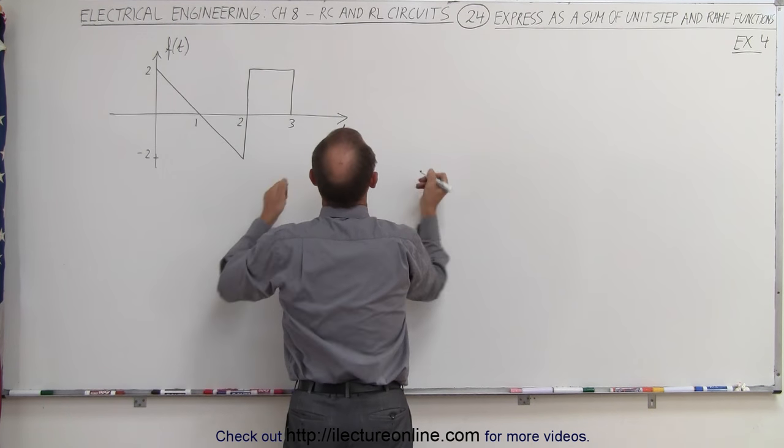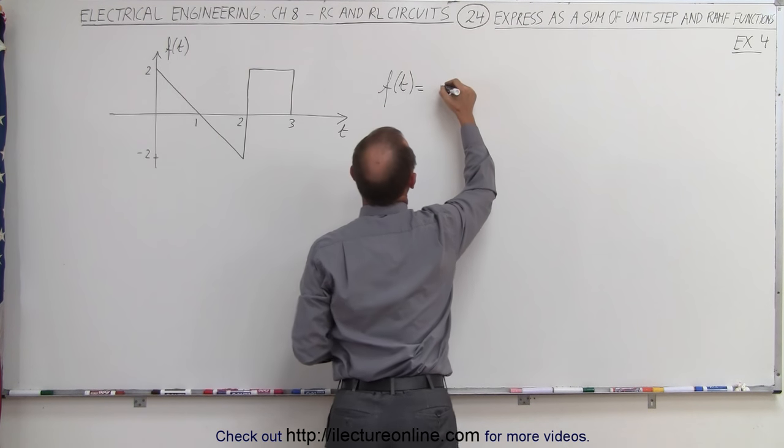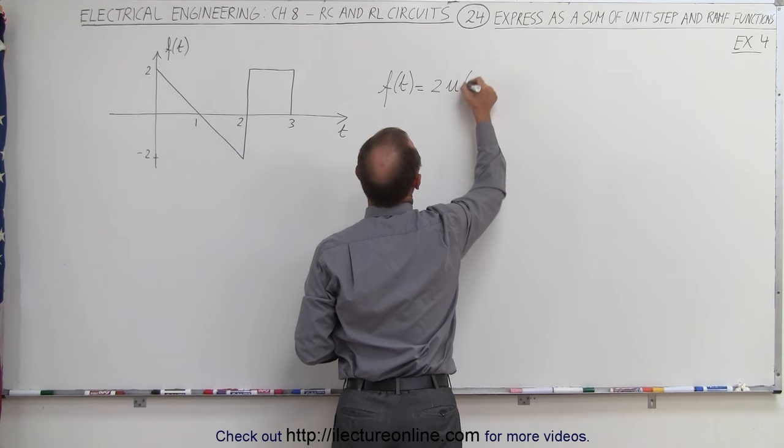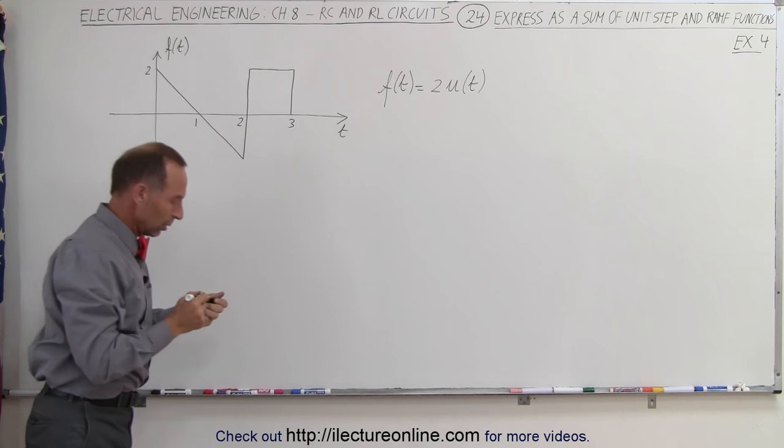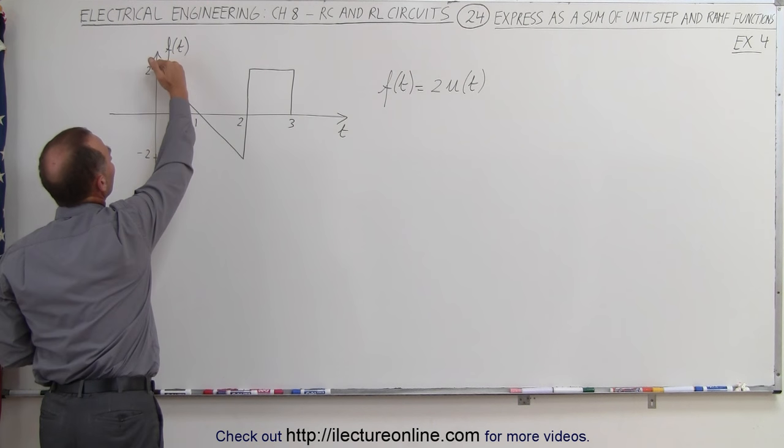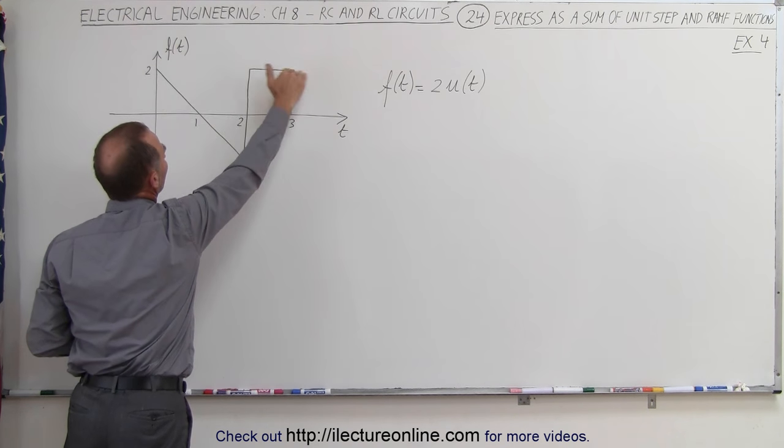So the first thing we want to do is get up to an amplitude of 2, so f(t) is equal to 2 times the unit step function starting at 0 because there's no offset. This gives us an input of 2, an amplitude of 2 all the way through forever.